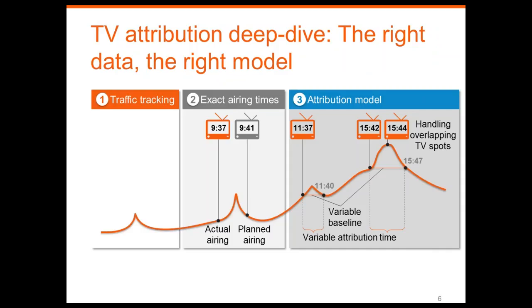While that concept is quite simple, the devil really is in the details when it comes to TV attribution. First, we have traffic tracking. Time resolution is a really important factor — we need second-by-second data, because once we aggregate to minute or hourly levels, we don't get enough resolution. Remember, 80% of that uplift traffic happens within the first 90 seconds. We also need to understand traffic sources — direct, organic, or paid searches — to determine what is TV-relevant traffic.